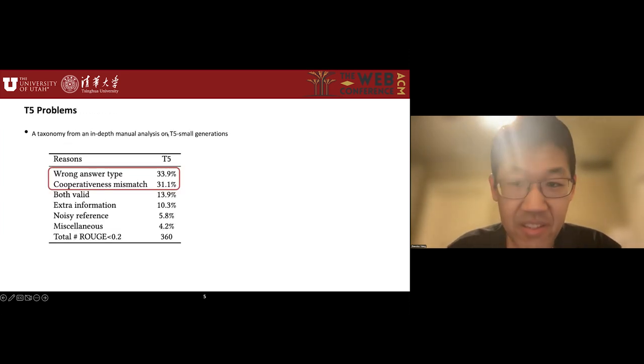Instead of simply reporting this as a new state-of-the-art, we conduct an in-depth investigation on the T5-small generations. In doing so, we examine a total of 360 examples with low ROUGE scores. As a result, we categorized six reasons for them. They include generation failures, reasons for mis-evaluation, and reasons for why user simulation is hard. The two most popular classes comprise 65% of the low-scoring examples. Here we will only briefly explain these two and leave the rest to readers in the paper.